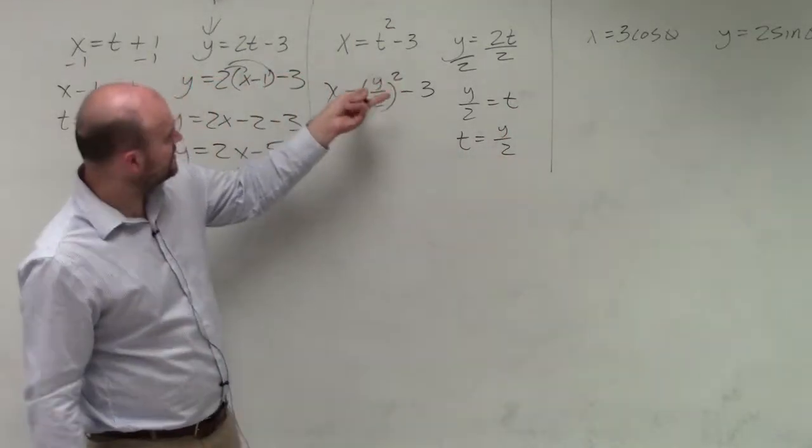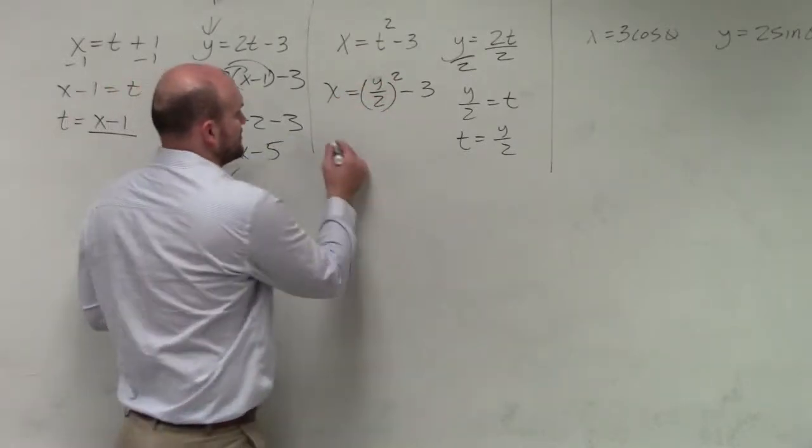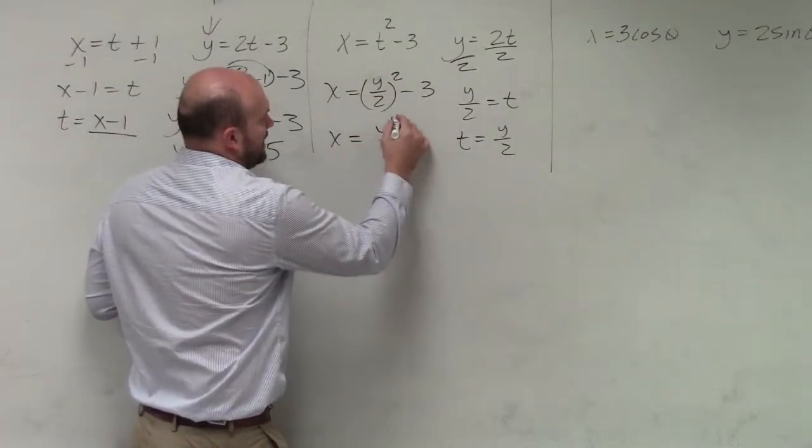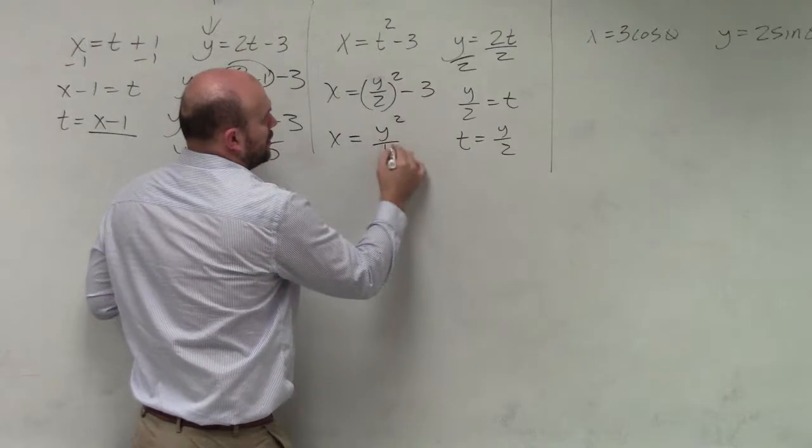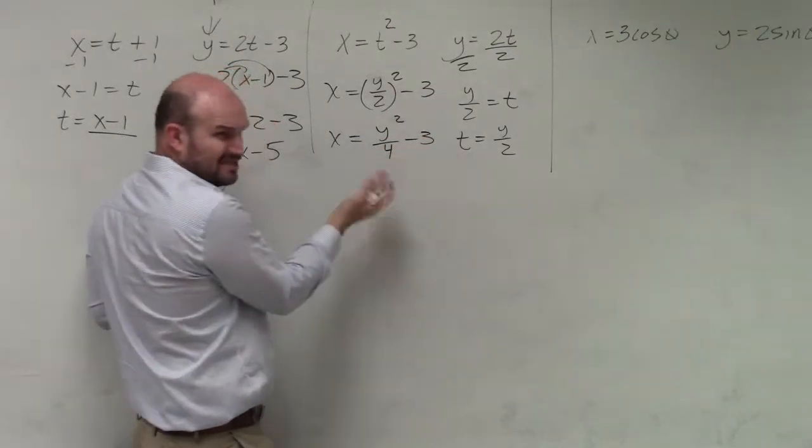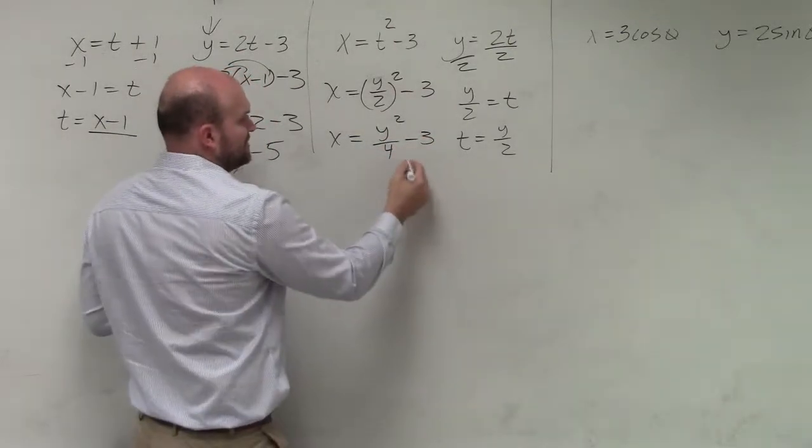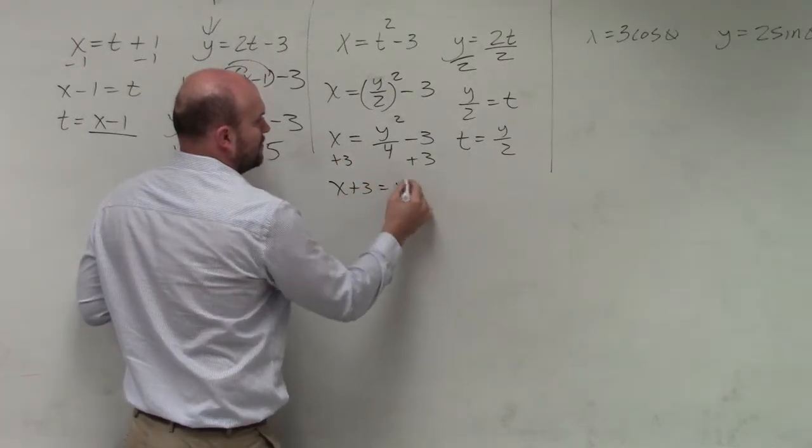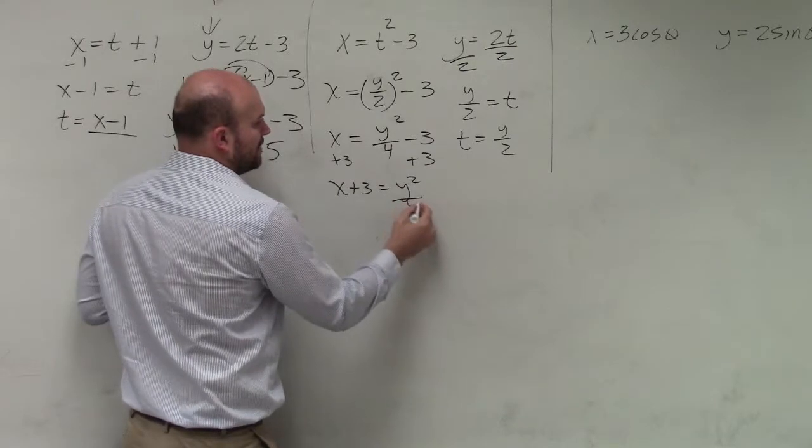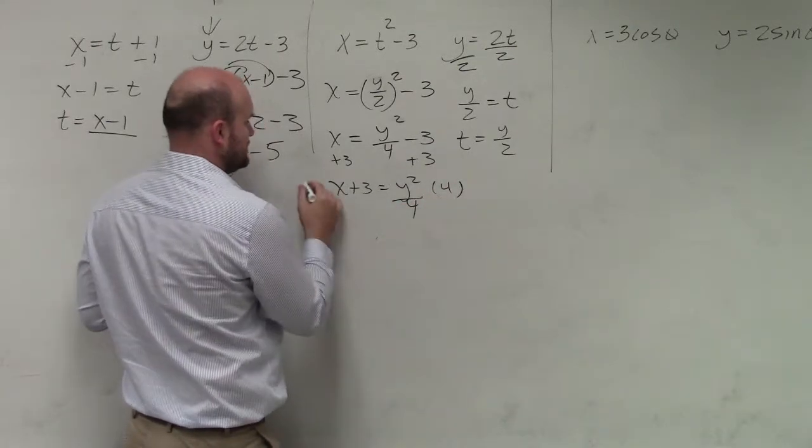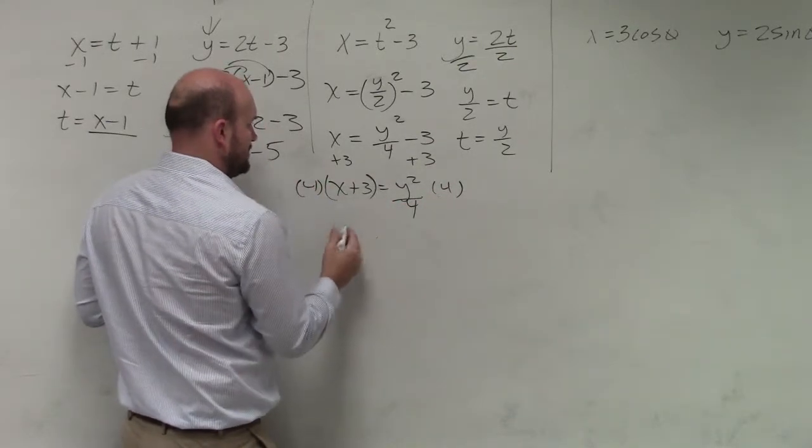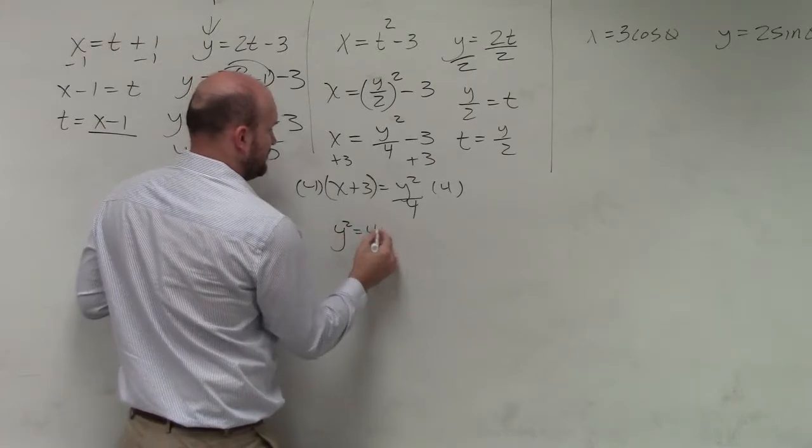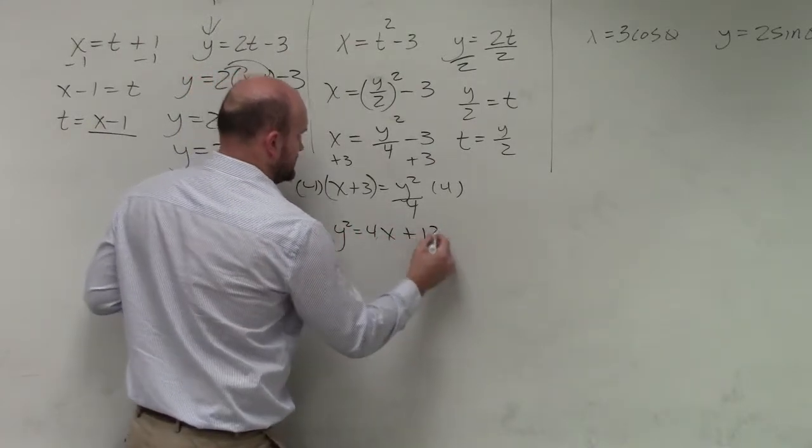So now, I just have to square this. So y over 2 squared is going to be x equals y squared over 4 minus 3. And I can still solve this for y. All I'd have to do is add a 3 to both sides. x plus 3 equals y squared over 4. And then multiply by 4 on both sides. So therefore, I get y squared equals 4x plus 12.